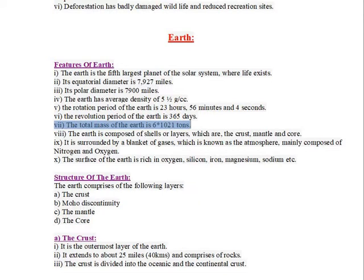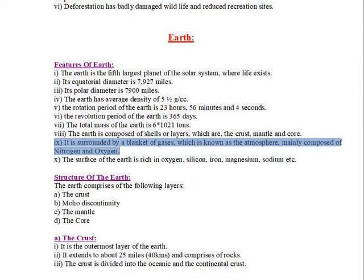The Earth is composed of shells or layers, which are the crust, mantle, and core. It is surrounded by a blanket of gases known as the atmosphere, mainly composed of nitrogen and oxygen.